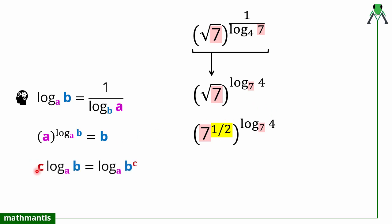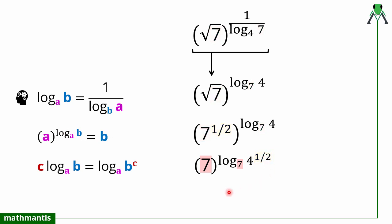Using the power property of logarithm — c times log base a of b equals log base a of b to the power c — the one-half moves to become 4 raised to the power one-half. Now the expression is 7 raised to the power log base 7, which is of the form a raised to the power log base a of b, so the answer is b. Here b equals 4 raised to the power one-half, which is 2. So the right hand side expression simplifies to 2.